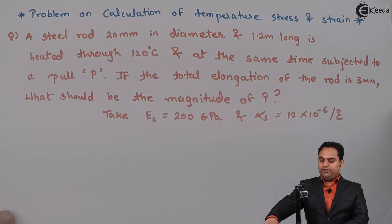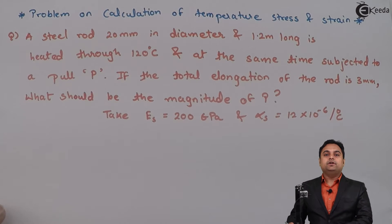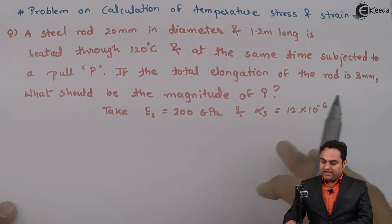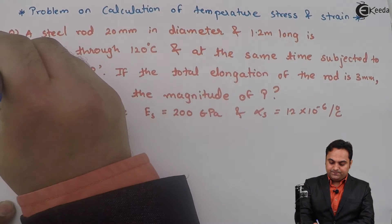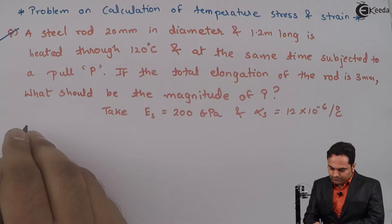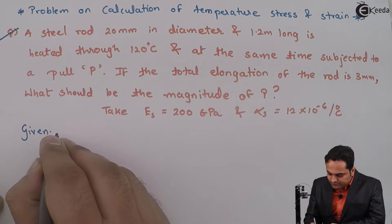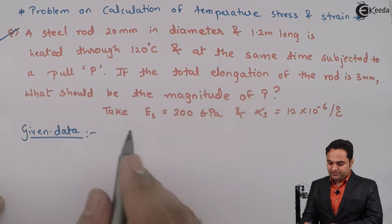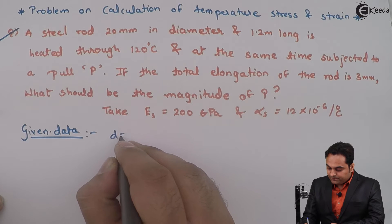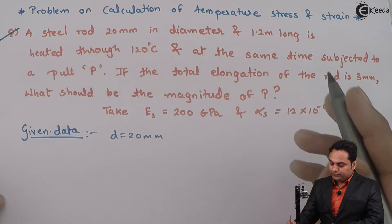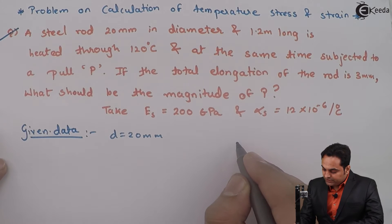Hello friends, here in this video we will see a problem on temperature stress and strain. We have a question and first we need to write the given data. A steel rod 20 mm in diameter — the diameter is given — so the rod is circular in cross-section.